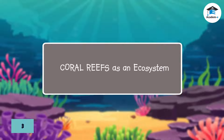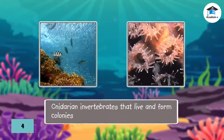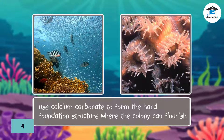Coral reefs as an ecosystem. Coral reefs comprise corals and other various organisms. Corals, or coral polyps, are cnidarian invertebrates that live and form colonies. These coral polyps use calcium carbonate to form the hard foundation structure where the colony can flourish.